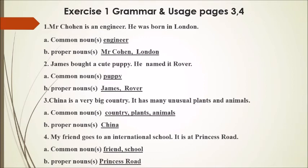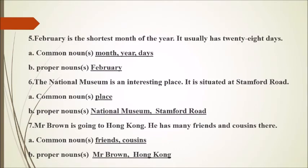Dear students, have you noticed that all the proper nouns have been started with capital letters? Name of a person, place, country. Number 5: 'February is the shortest month of the year. It usually has 28 days.' Common nouns: month, year, days. Proper noun: February.